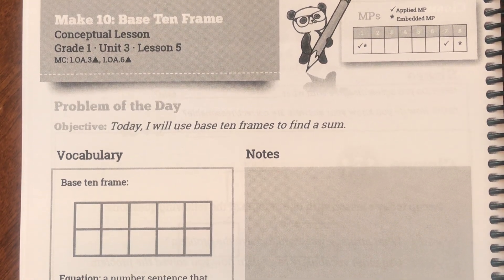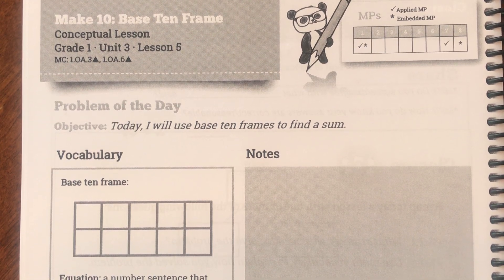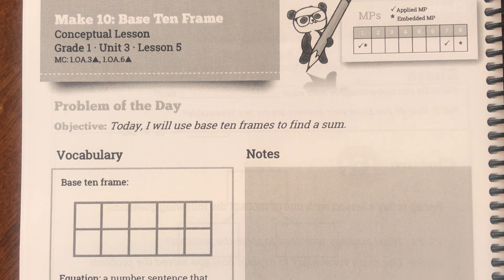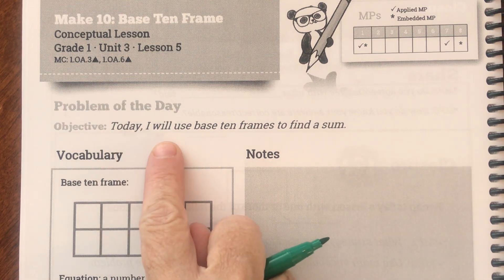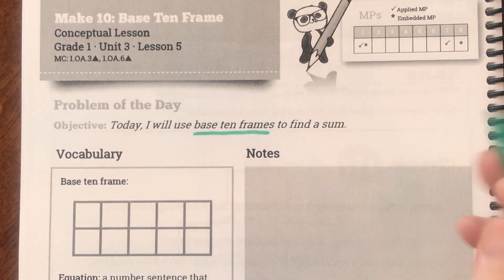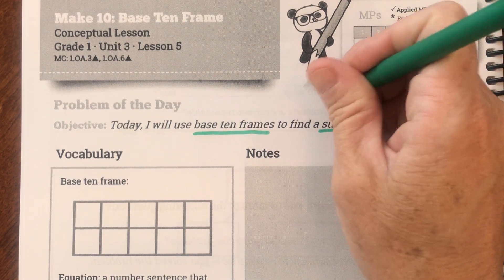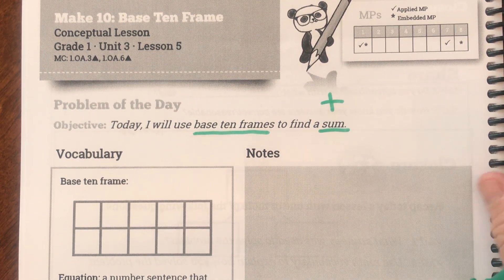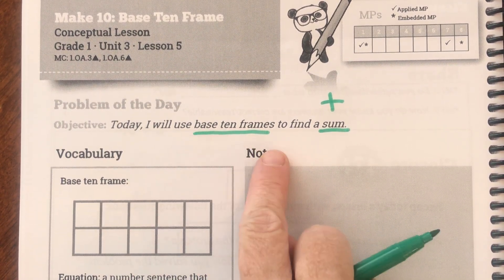Good morning ladies and gentlemen. Today we are on page 165 of your student journal, and we are going to continue adding. Today we are going to learn another strategy of how to add. We've used the number line strategy, we've used the count on strategy, and today we're going to use another strategy called base 10 frames. Our objective today is: I will use base 10 frames to find a sum. Remember, a sum is the answer to an addition problem.